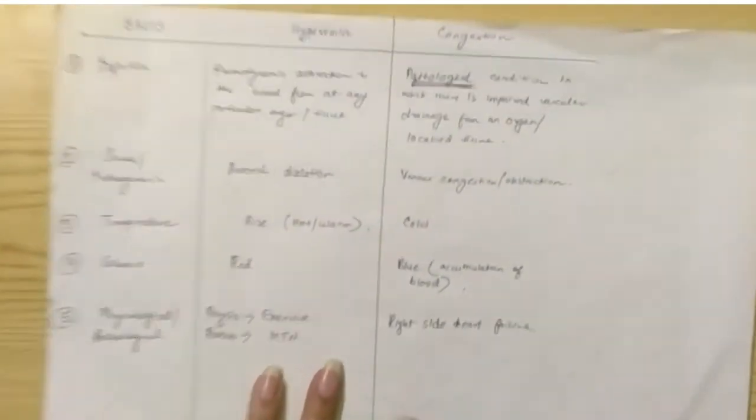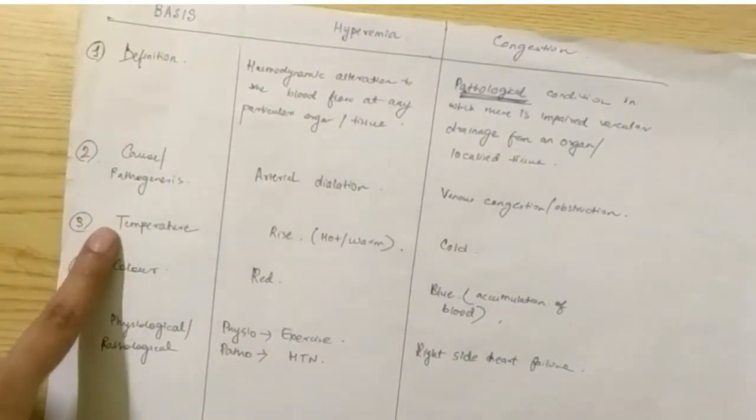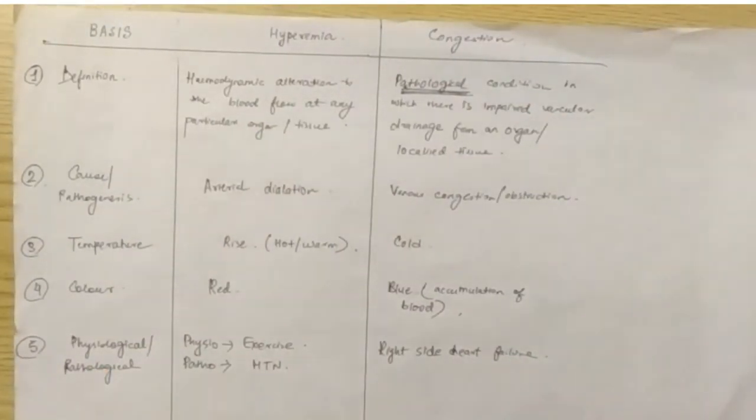So, these are the differences between hyperemia and congestion. We have discussed this in six points: definition, pathogenesis, temperature, color, and is it a physiological or a pathological process. Okay, thank you.